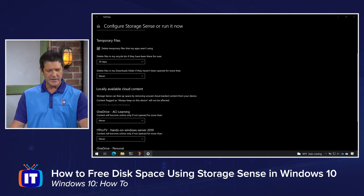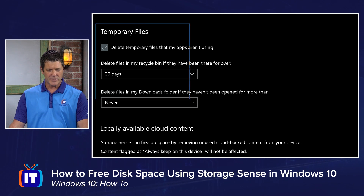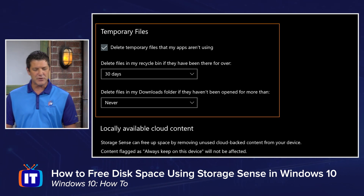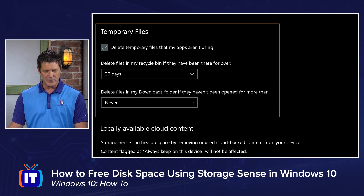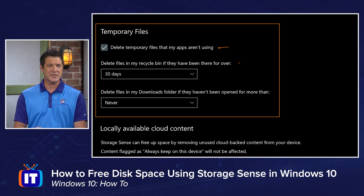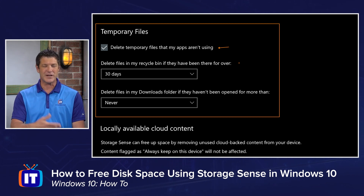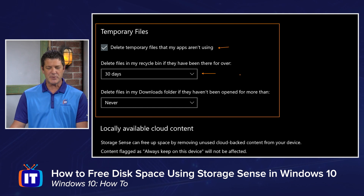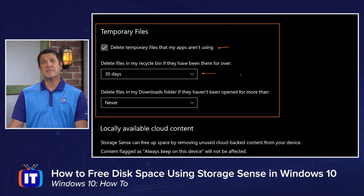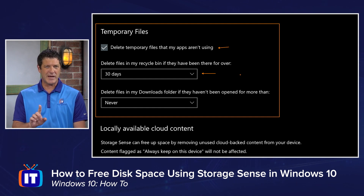What it gets rid of and when is decided right here. There's a check mark that says 'Delete temporary files that my apps aren't using.' So every time StorageSense runs, whether that's when you're low on space or every 30 days or whatever you choose, it's going to delete temporary files that aren't being used anymore. We're also going to look at the Recycle Bin, and by default, if anything in there has been there for over 30 days, it's going to remove that. We can change that — let me show you what that dropdown list looks like.